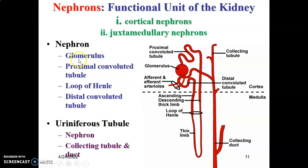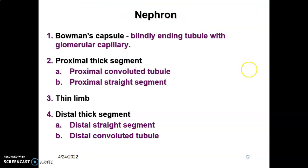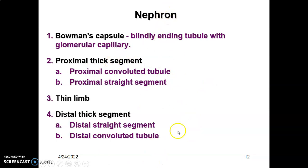A nephron is made up of two parts: the glomerulus and the uriniferous tubules. The uriniferous tubules are made up of the proximal convoluted tubule, distal convoluted tubule, and the collecting tubules. In the nephron, the glomerular part is surrounded by Bowman's capsule — it is a blindly ending tubule housing the glomerular capillaries. From the glomerulus there is a proximal thick segment, then a thin limb, and a distal thick segment with distal straight segment and distal convoluted tubule.